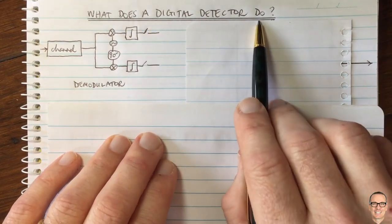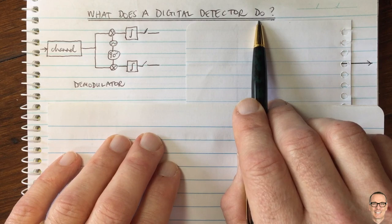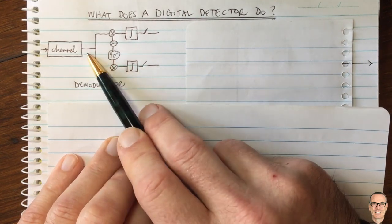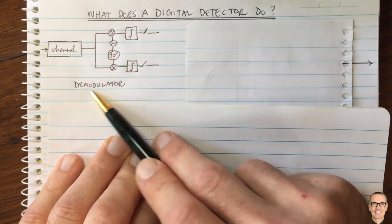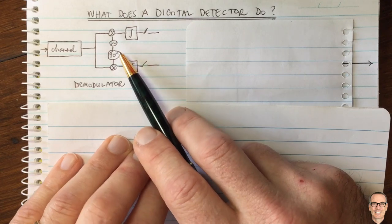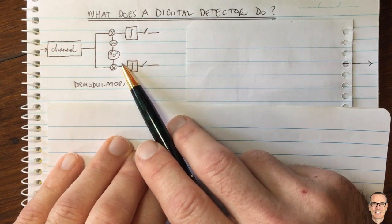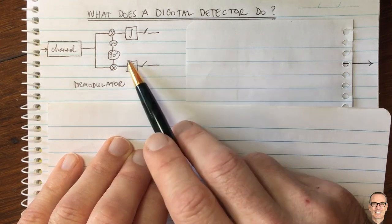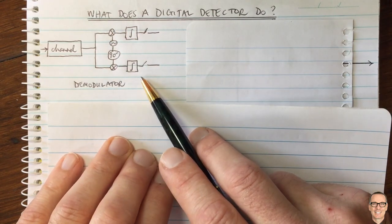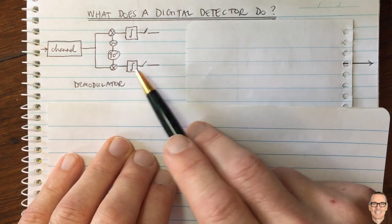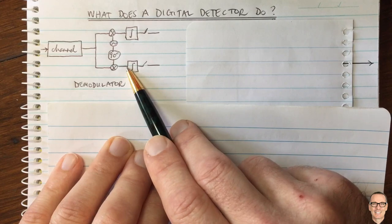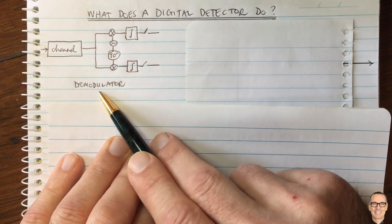What does a digital detector do in a digital communication system? The channel output goes into a demodulator, which takes the signal back down from the carrier frequency to baseband. There's a video on the channel about matched filters which explains the demodulator and shows this form, which is a decorrelating demodulator.